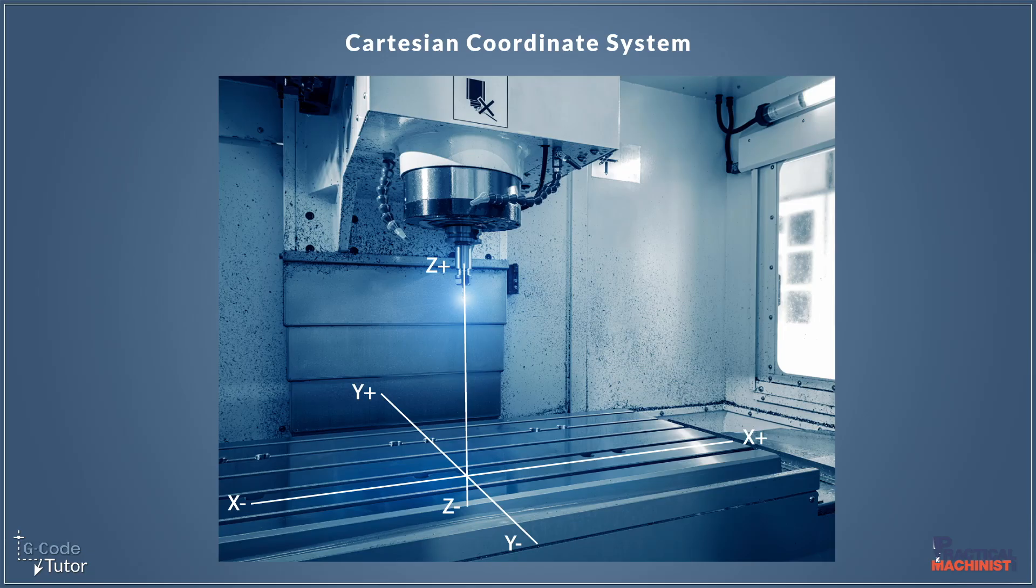Before we get into too much detail, we need to know which way the axes move inside our machines. So I made this diagram here and we're looking at the Cartesian coordinate system. The Z-axis goes up and down, the Y-axis goes forwards and backwards to us, and the X is left and right. Now if you have a horizontal mill, this will change, so bear that in mind. Z is always coming down from the center line of the tool.